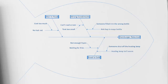Looking at our last cause — the food is too cold — there are two reasons identified using Ask Why. Maybe the food is too cold because we were waiting for fries, and why were we waiting? Perhaps there are just not enough fryers available. The other item is that the heating lamp isn't warm — perhaps somebody shut it off.